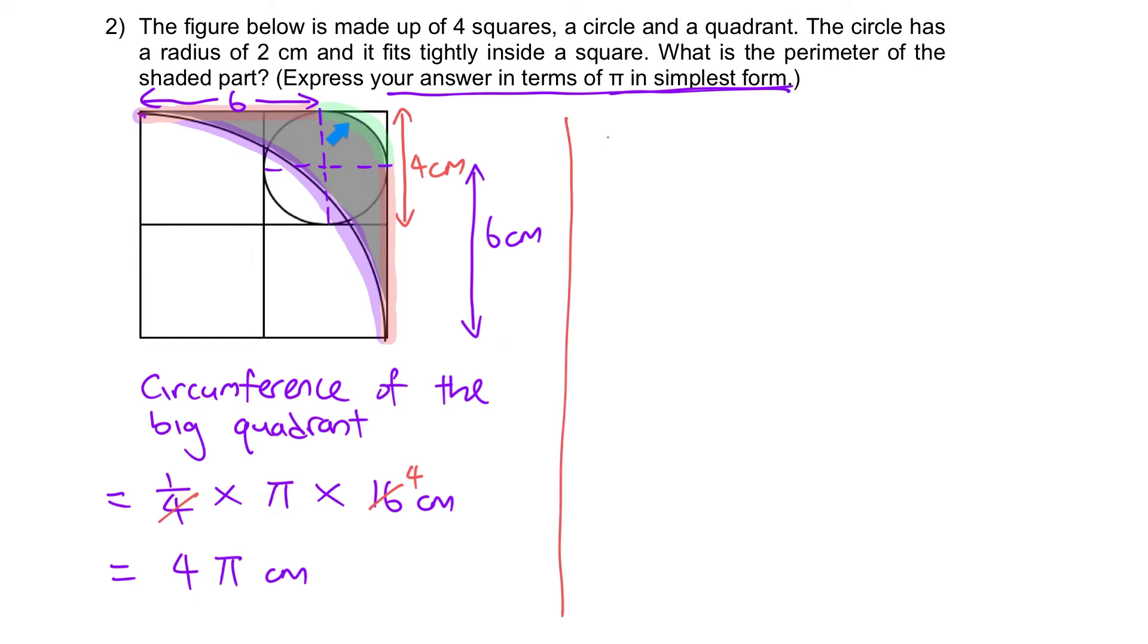Next, let's move on to find the circumference of the small quadrant. Again, a quarter of π times the radius of the small quadrant, which is 4. That will give you a very nice number, π.